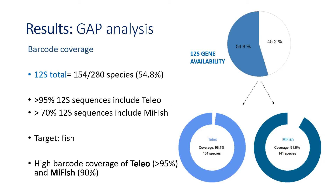For the 12S gene, which was the second best represented, the two most common barcodes are Teleo and MiFish. There were sequences of the 12S gene for 154 species out of 280, and Teleo and MiFish matched for 151 and 141 species respectively — indicating high coverage for both barcodes.